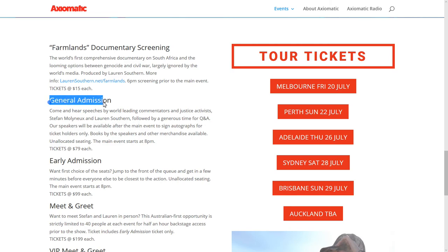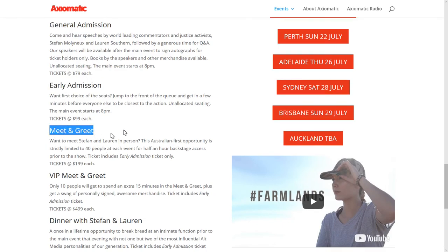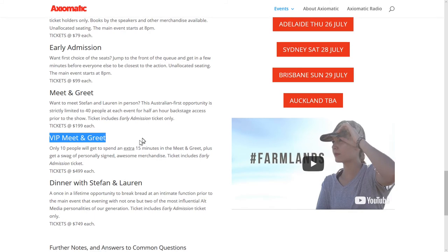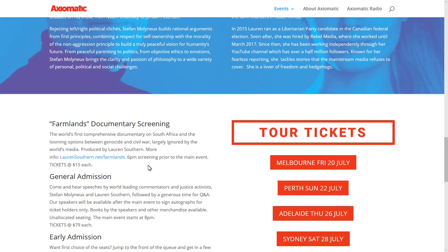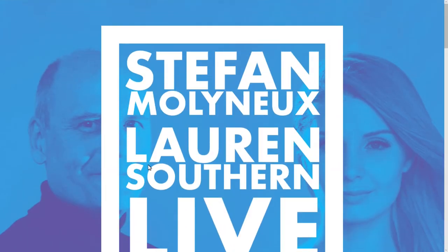So there are the general admission tickets. There's the early admission. Just a little bit more if you want to get a jump on the good seats. There's a meet and greet, which we are looking forward to enormously. A VIP meet and greet and dinner with myself and Lauren. Come and break bread with us. It is going to be a wonderful, wonderful time. So we're really, really looking forward to seeing everyone there. Get your tickets now. The ticket sales are going very, very well. Don't delay, don't let it pass you by. Come and join us. Break bread and help save the world.